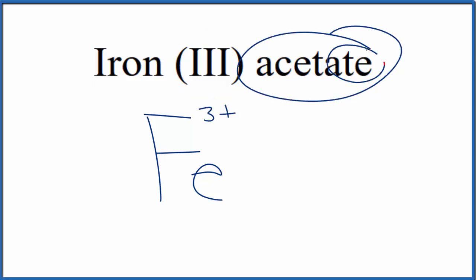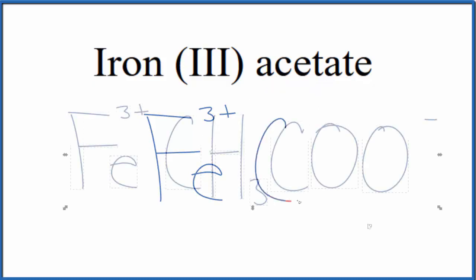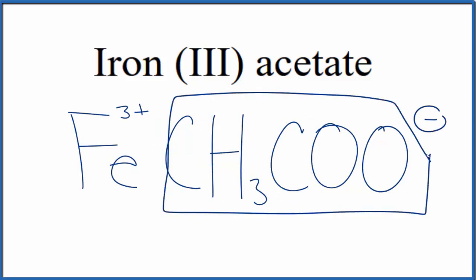For acetate, we see this -ate on the end. That means it won't be on the periodic table — this is a polyatomic ion. So you either memorize that the acetate ion is CH3COO minus, or you look it up on a table if you're allowed to. This minus applies to the whole acetate ion.